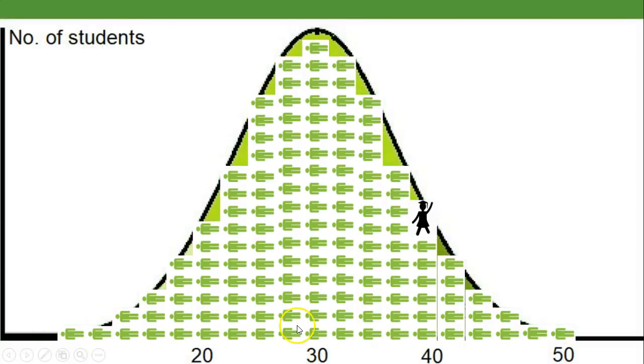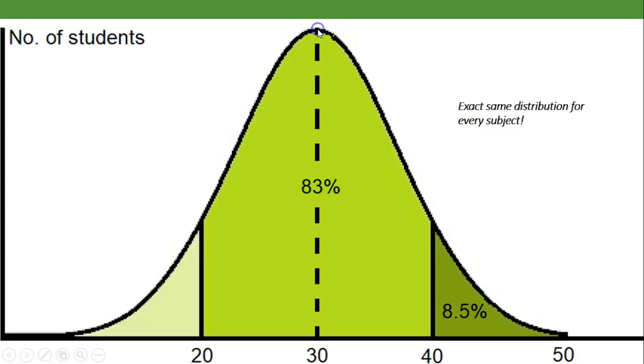If you're in that middle bulk group, you get something around 30. The person who's right smack in the middle of those rankings gets a 30. The person who is a bit above usually gets mid-30s, a bit below mid-20s. 83% of people get between 20 and 40, then a small number get between 40 and 50, and a small number get less than 20. This is the exact same distribution for every subject.